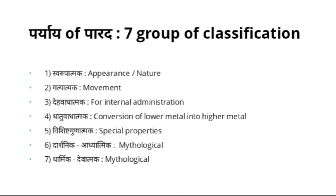Dhatuvaadhatmaka — based on capacity of converting lower metal into higher metal — it has synonyms like Dhivya Rasa, Maharasa, Rasa, Rasendra, Rasesha, Rasottama, Rasadhatu, Rasaraja, Rasanathya, Rasaleha, Siddhadhatu, Suta, Sutaka, and Mishraka. As it converts any kind of lower metal into gold and silver, it is superior — the king among all metals and minerals — and that's why it is called by all these names.